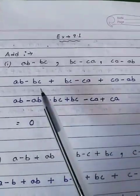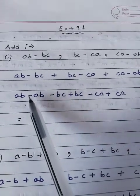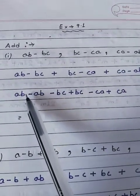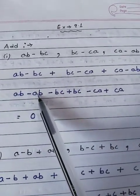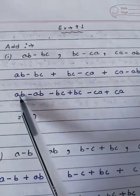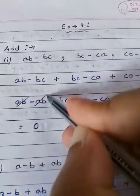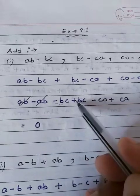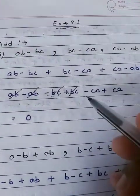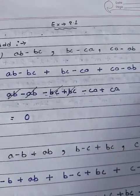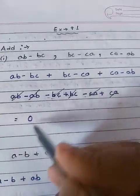Now you have to solve it. Addition or subtraction can only be performed among like terms. So: ab minus ab is zero — cancel. Minus plus is minus, so bc minus bc is zero — cancel. Minus plus is minus, so ca minus ca is zero — cancel. The answer is zero.